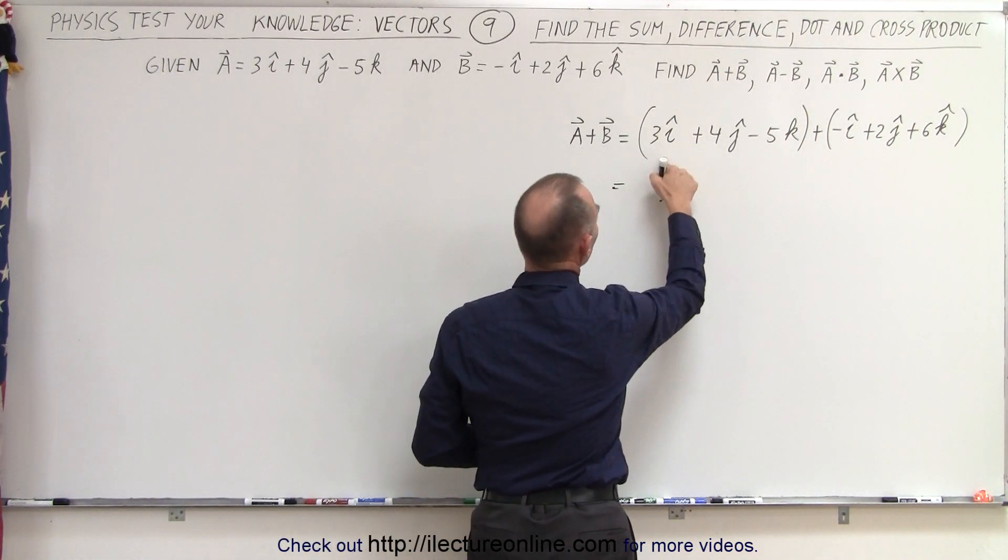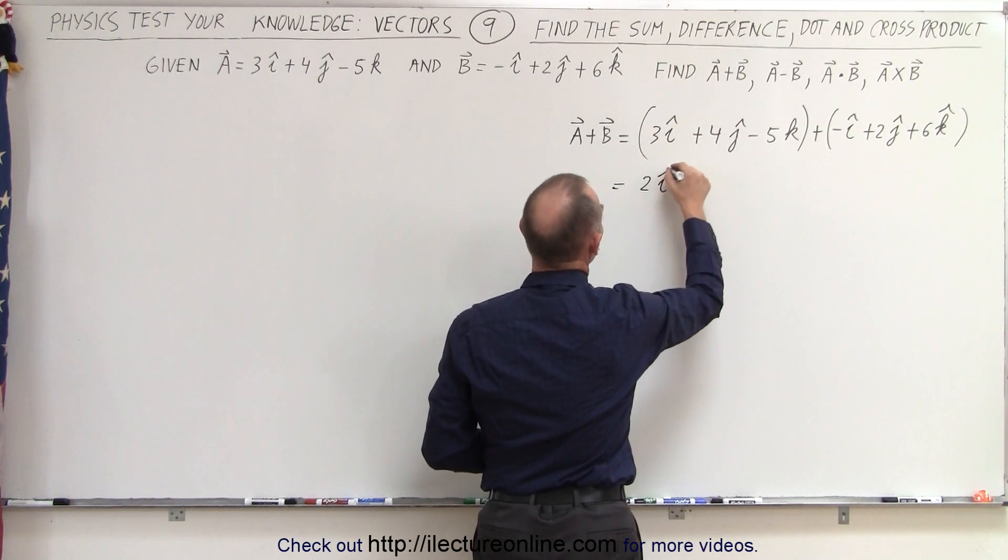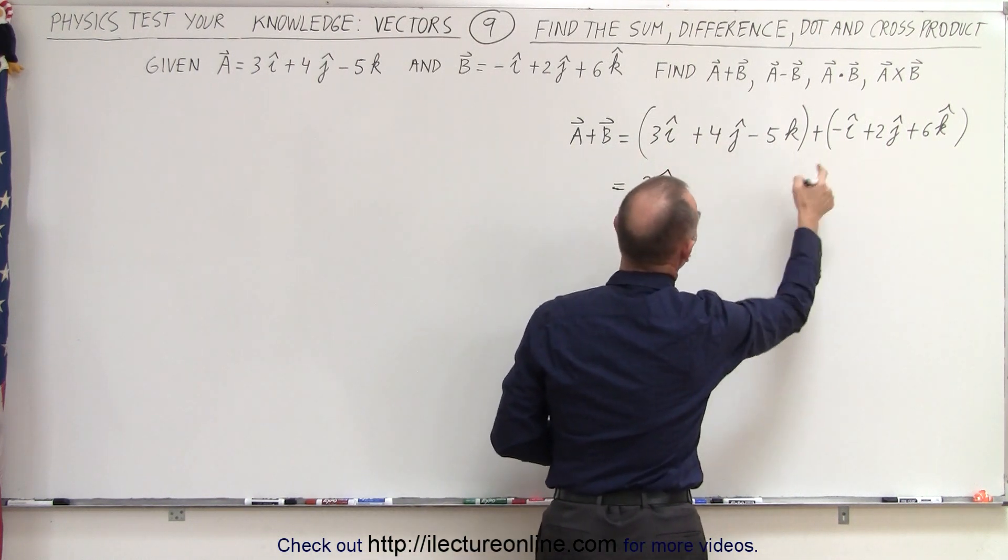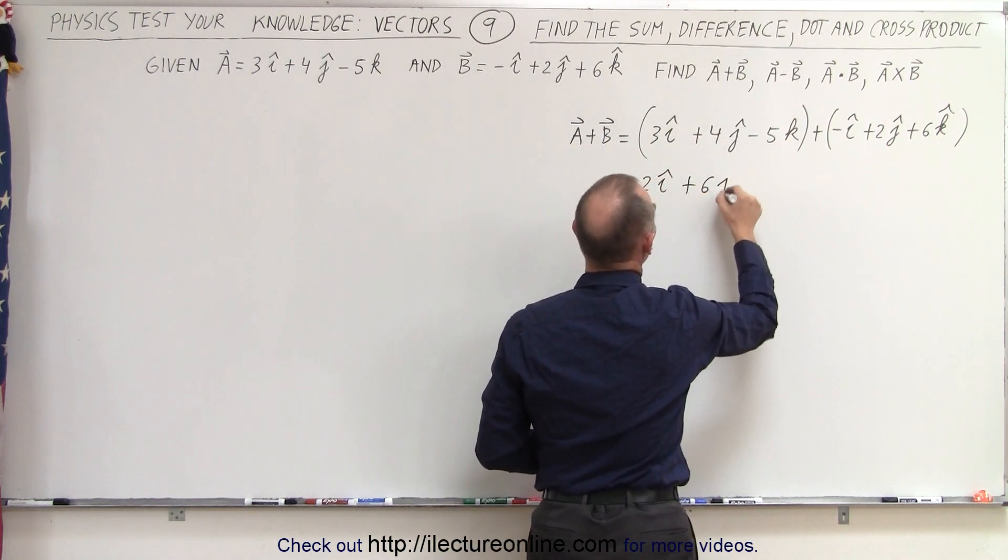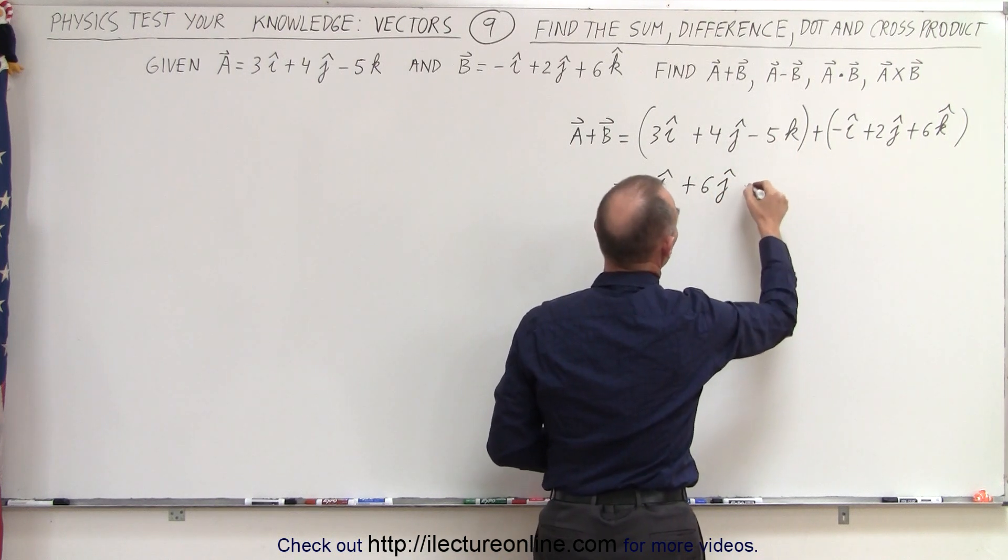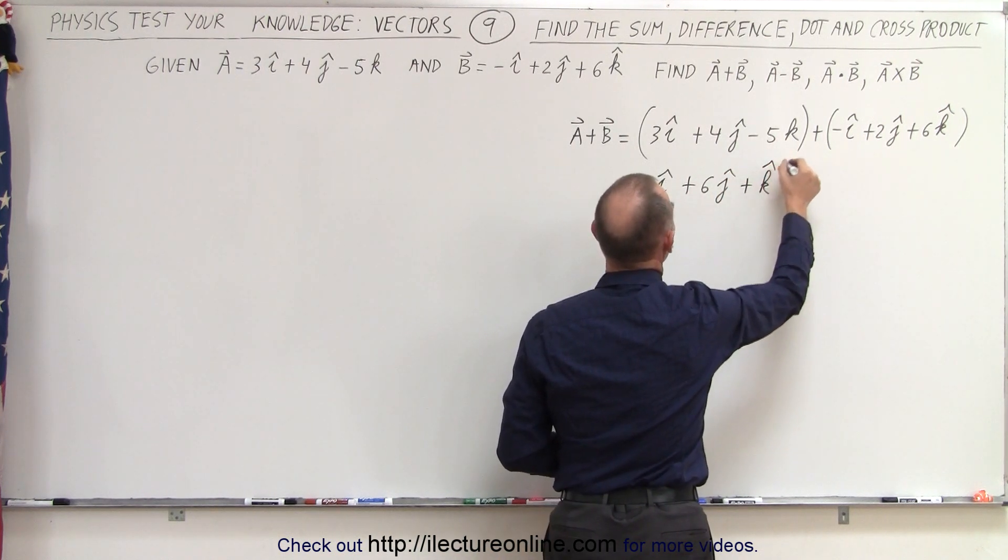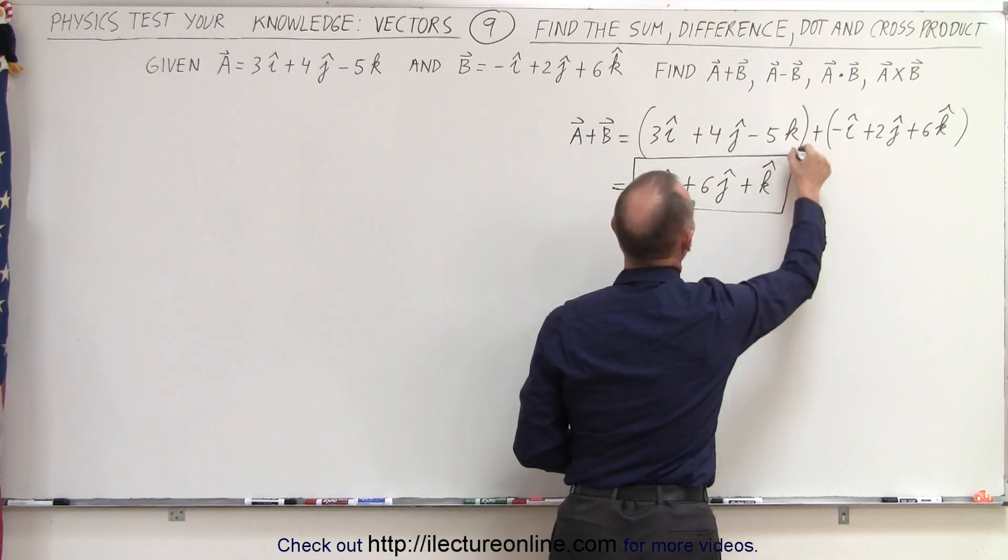So, this is equal to 3 minus 1 or 2i, 4 plus 2, which is plus 6j, and minus 5 plus 6, which is plus 1k. And this is the sum of the two vectors.